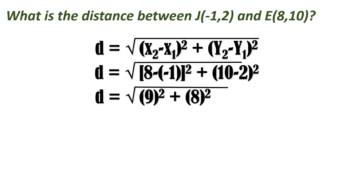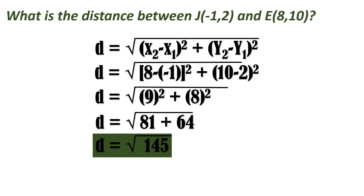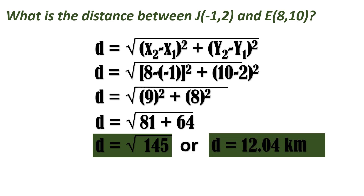Remember, when we have an exponent, 9 squared means 9 times 9, and 8 squared means 8 times 8. So that gives us 81 plus 64. Now we add what's inside the radical sign: 81 plus 64 gives us square root of 145. Using your calculator, press the square root of 145, and that gives us a distance of 12.04 kilometers.